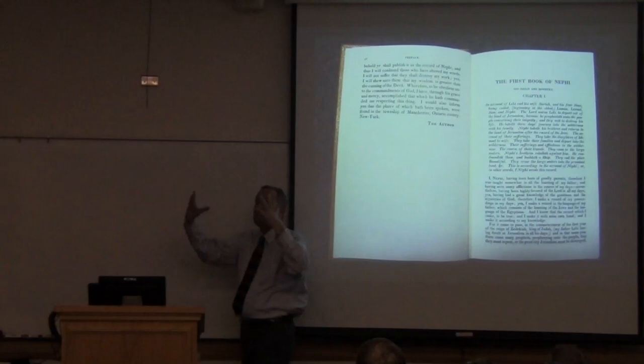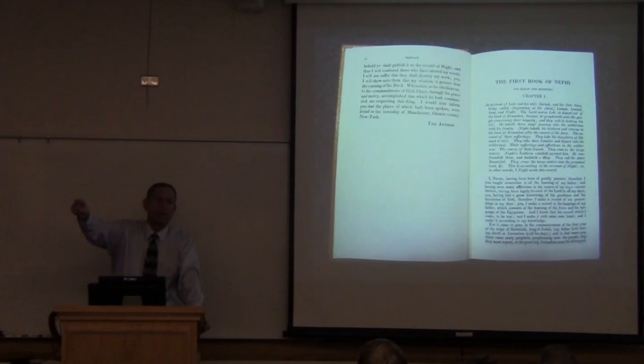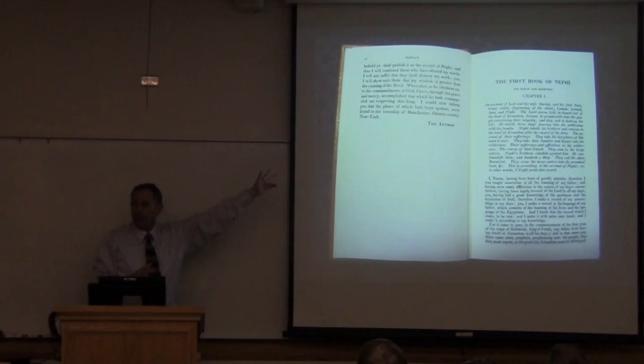Joseph Smith did fulfill the commandment in Section 10 to publish what you know as 1st and 2nd Nephi, Jacob, Enos, Jarom, Omni, as the record of Nephi. He made a special attempt right there to identify that. That explanation, that preface, has never occurred in any other edition of the Book of Mormon. So you kind of have to know that Joseph did keep that commandment with the original edition, and that's kind of nice.